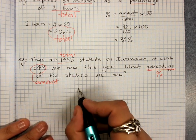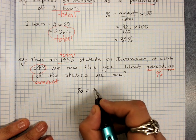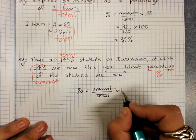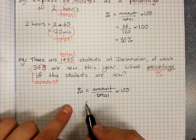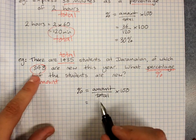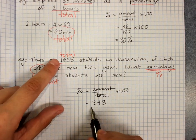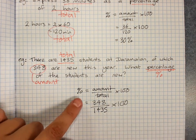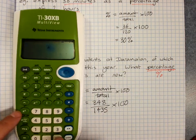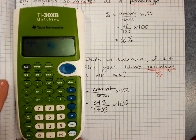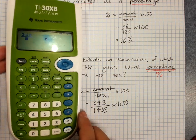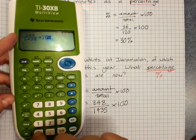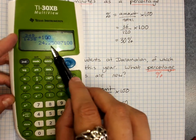So we remember our steps: percentage equals amount out of total times 100. That will be, here's my amount, 348 out of 1435 times 100. Now I've written down what's going in the calculator. I can put it in: 348 over 1435 times 100.